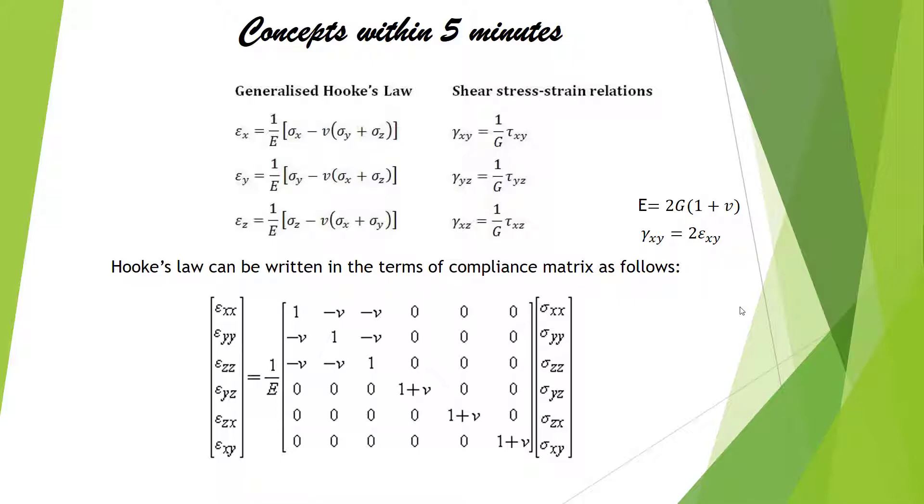How can we put this in a matrix form? Let's consider two more equations. E equals 2G into 1 plus mu, where mu is the Poisson's ratio and as I already mentioned, G is the shear modulus and E is the Young's modulus.